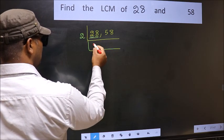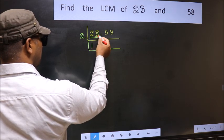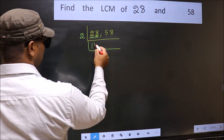First number 2, when do we get 2 in the 2 table? 2 times 1 is 2. The other number 8, when do we get 8 in the 2 table? 2 times 4 is 8.